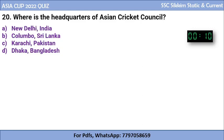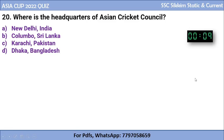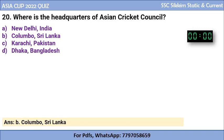Question 20: Where is the headquarters of the Asian Cricket Council? Is it in New Delhi, Colombo, Karachi, or Dhaka? The correct answer is Colombo, which is in Sri Lanka — the headquarters of the Asian Cricket Council.